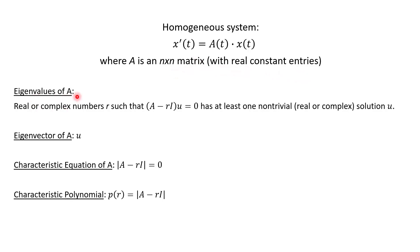We have our eigenvalues of A, which could be real or complex numbers, r, such that A minus r times I — remember I is your identity matrix — times u equals zero, and this has at least one non-trivial real or complex solution, which is the vector u, and that vector is an eigenvector of our matrix A. The characteristic equation of matrix A is the determinant of A minus rI equals zero. In the past we've used lambda for eigenvalues; right now we're just using r. The characteristic polynomial is the polynomial equal to this determinant.